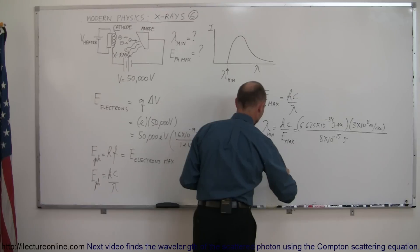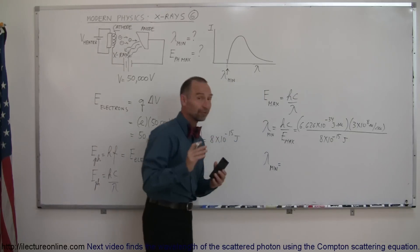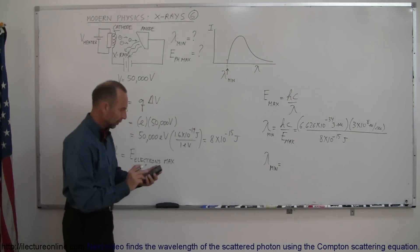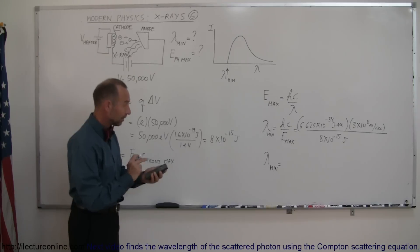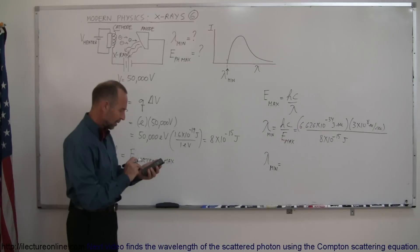And that gives us the minimum wavelength of the radiation coming from that anode. So let's find out what that is. Take the inverse of that. Multiply times 6.626E to the minus 34. And then multiply times 3E to the 8.